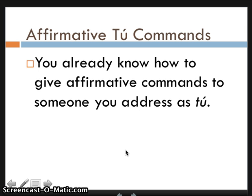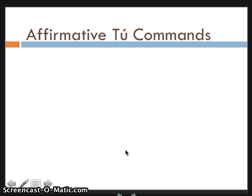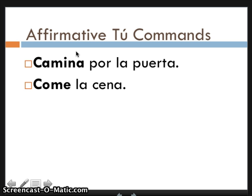Hopefully you already know how to give affirmative commands to someone you address as tú. The only thing you have to do is use the third person form of the verb, or the él/usted form of the verb — third person is probably a better way to think of it. For example, 'camina por la puerta' is the affirmative tú command to tell someone to walk through the door. So instead of 'caminas,' when I turn it into a command I say 'camina por la puerta.' And with the verb comer, I would say 'come la cena' instead of 'comes la cena' — 'comes la cena' means 'you eat the dinner,' and 'come la cena' means 'eat the dinner.'